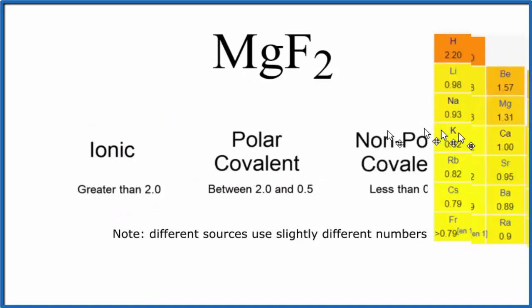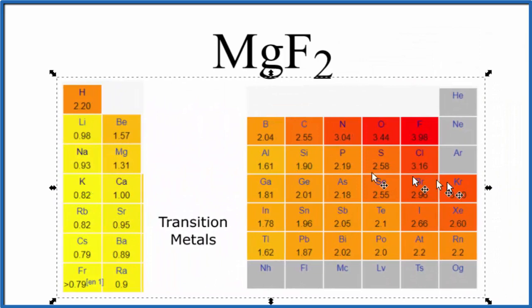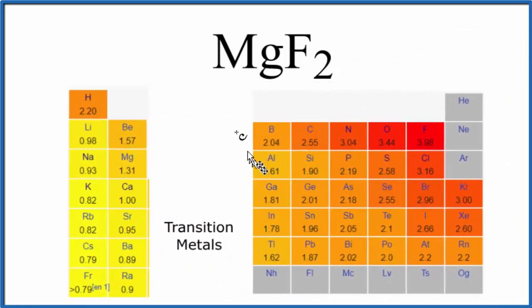So let's look at the periodic table with the electronegativity values shown. We find magnesium right here, 1.31.